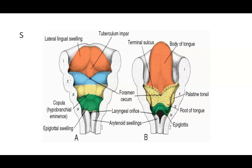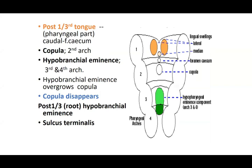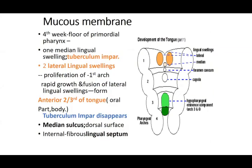The first pharyngeal arch nerve supply is the trigeminal nerve, specifically the mandibular branch in this region. Because the anterior two-thirds of the tongue develops from the first pharyngeal arch, it gets its nerve supply from the trigeminal nerve — the mandibular branch. The tuberculum impar disappears, and the fused lateral swellings form the body or oral part of the tongue.